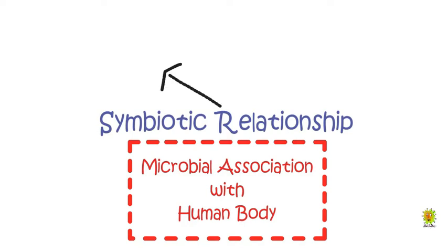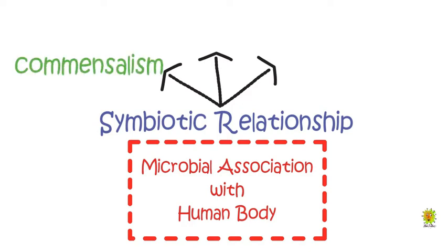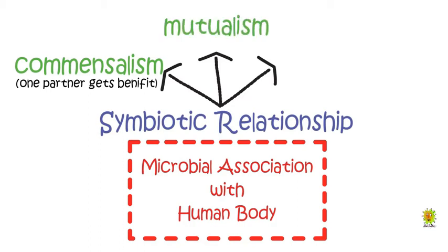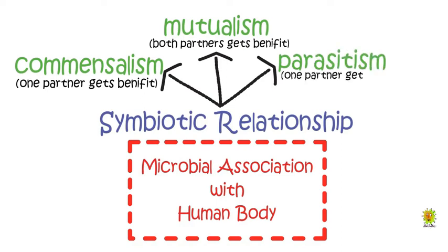Microorganisms usually form three types of symbiotic relationships. The first is commensalism, an association in which one partner gets benefit while the other neither gets benefit nor harm. The second is mutualism, an association in which both partners get benefit from each other. The third is parasitism, in which one partner gets benefit while harming the other.